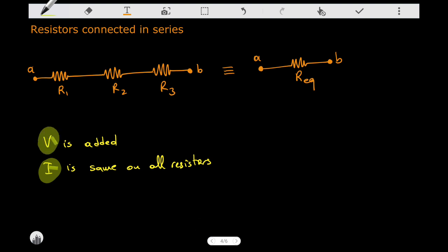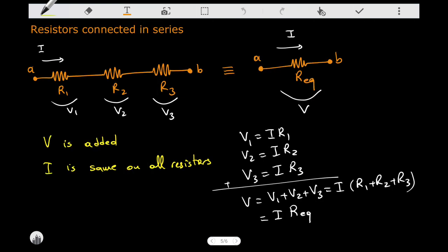So as a result, if I call the potential drops as V1, V2, and V3, in that case, I just write it in terms of the individual resistances, write each individual potential drop, and the total potential drop is the sum of these.